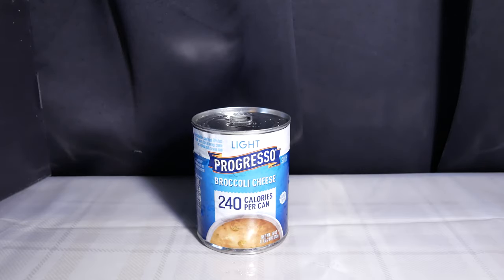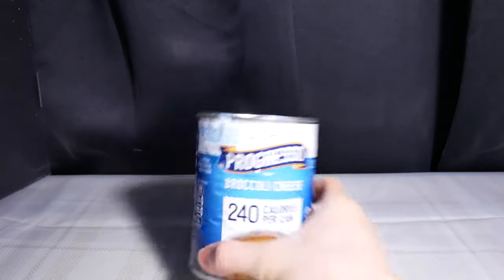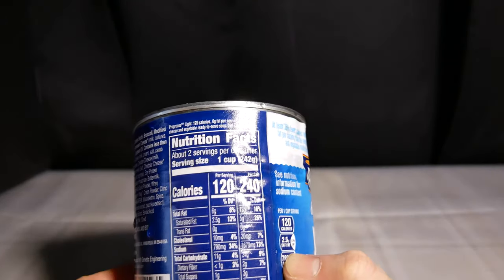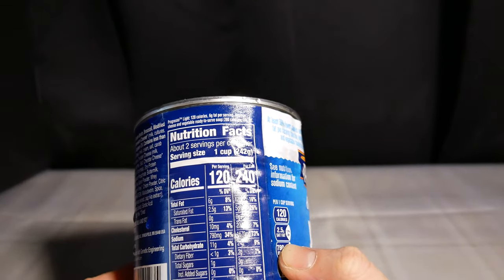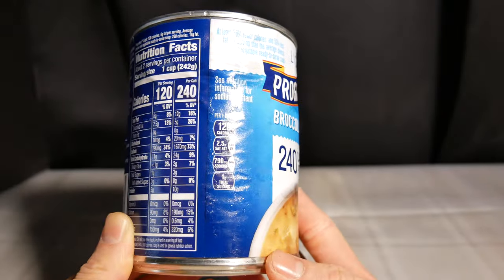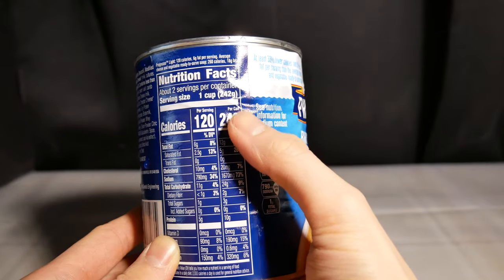This is the Light Broccoli Cheese by Progresso. 240 calories per can, one cup serving is 120 calories. Serving size serves two servings, so there's two servings of this in one can. One cup is 242 grams. Total fat 8%, 16 grams. Well, I'm gonna eat the entire can.